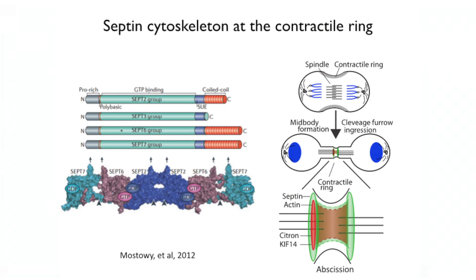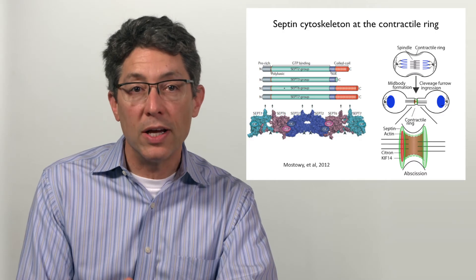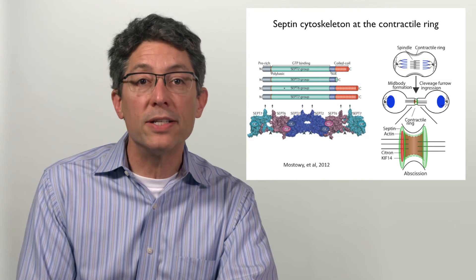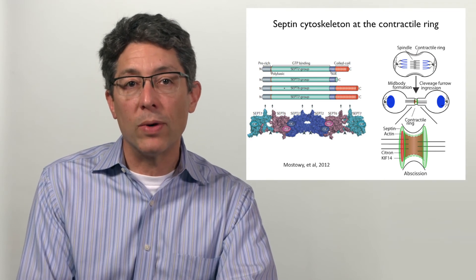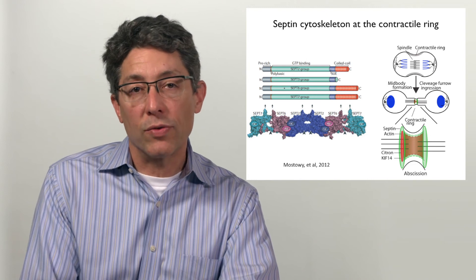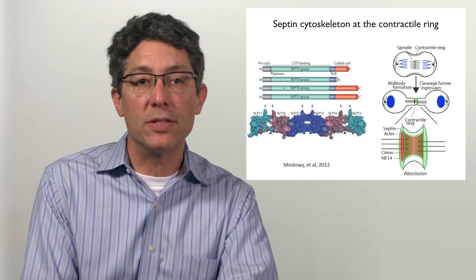We found that Zika protease bound directly to septin 2 and cleaved it specifically at residue 306, which just happened to contain a perfect Zika protease cleavage site. Zika infection also led to cleavage of septin 2. Knockdown of septin genes led to defects in cell division very similar to what we observed following Zika infection or following Zika protease expression. Mutation of the septin residue 306 to a non-cleavable residue blocked this cleavage, and expression of this non-cleavable septin was sufficient to rescue the cytokinesis defects seen with expression of the Zika protease in neuroprogenitors. We conclude that one mechanism by which Zika produces toxicity is through the protease running rampant in host cells cleaving host proteins, and we think septin 2 is one of those important substrates.